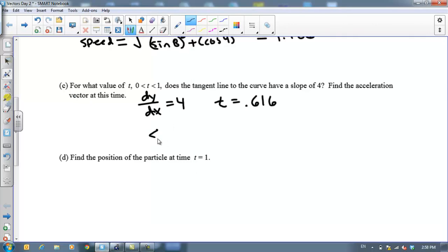And so I got those two values right there. And so let's write that down as a vector. So that's going to be 1.107, negative 0.456. That's my acceleration vector at the point 0.616.